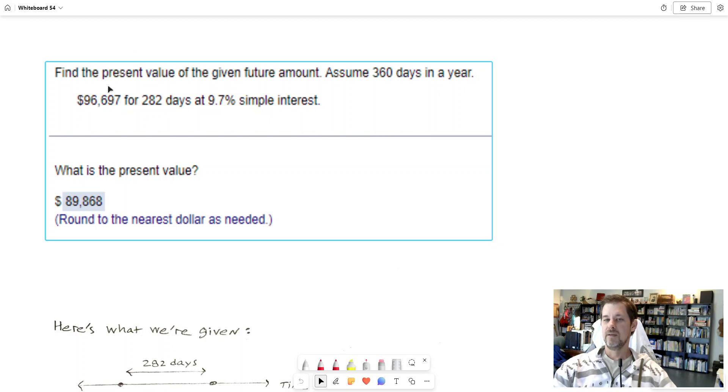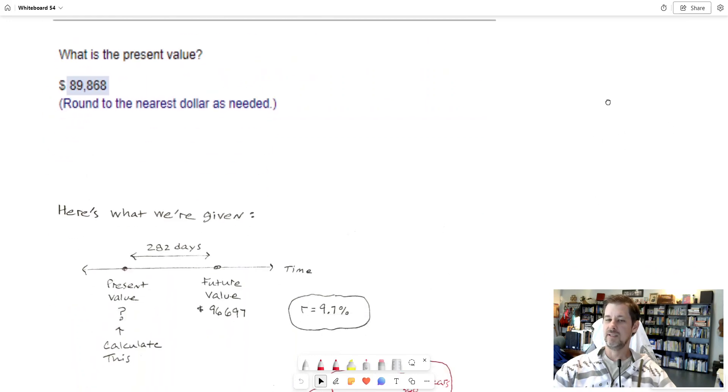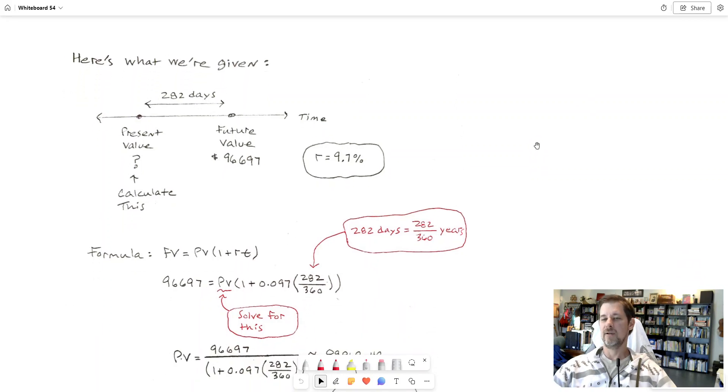I see there that I have time 282 days, interest rate 9.7%, so I'm going to, again, I'll draw a diagram if you would consider yourself a visual learner. So I have this value in the future that whatever I start with today becomes, okay, 96,697. 282 days separates them, that's how much time went by, right, for the present value to become the future value. The rate was 9.7%.